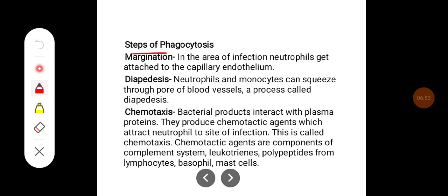Different steps of phagocytosis. Initially there will be margination. In the area of infection, the neutrophil gets attached to the capillary endothelium. Then diapedesis occurs where neutrophils and monocytes can squeeze through pores of blood vessels, a process called diapedesis.